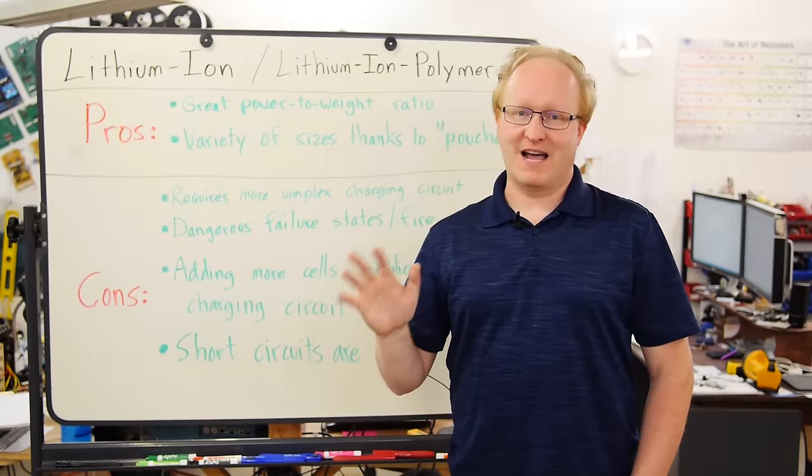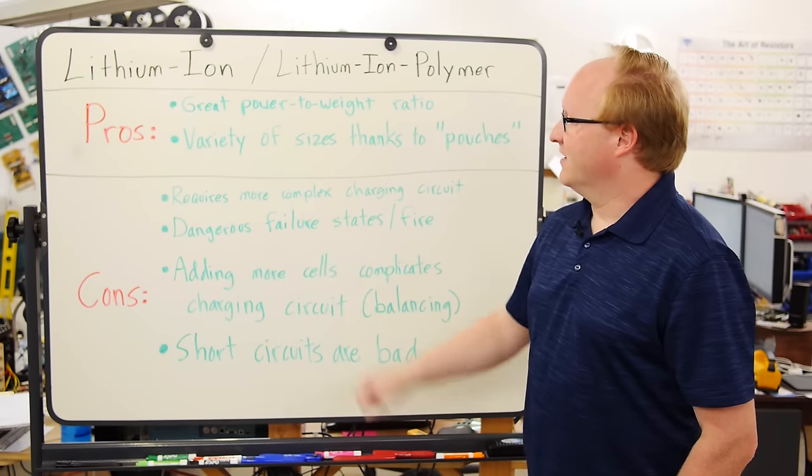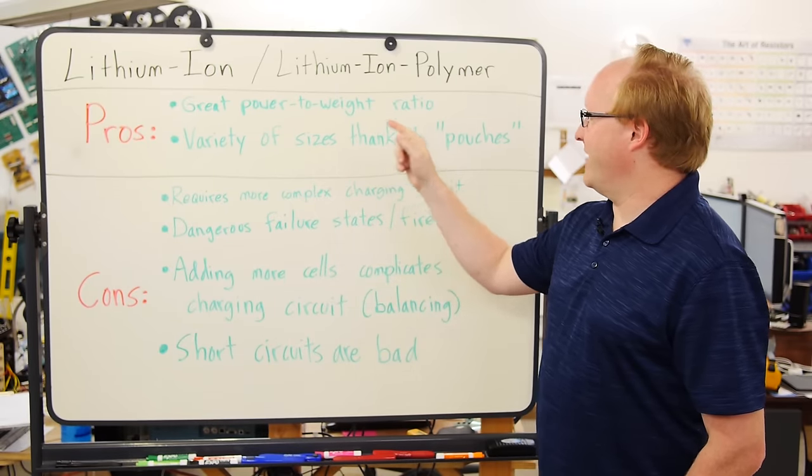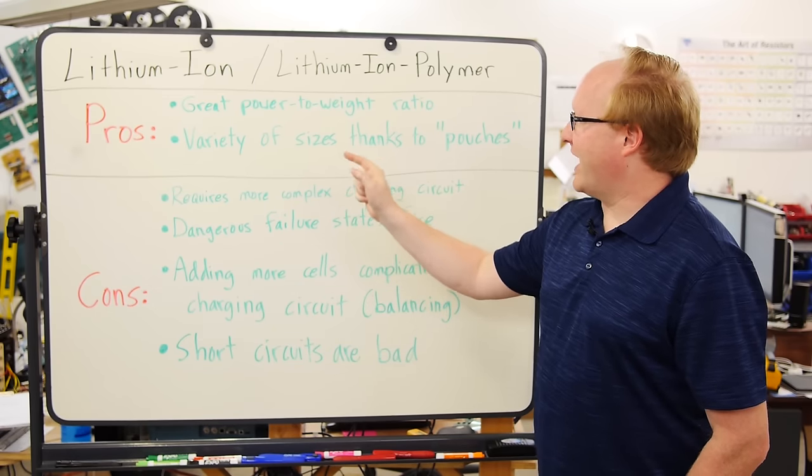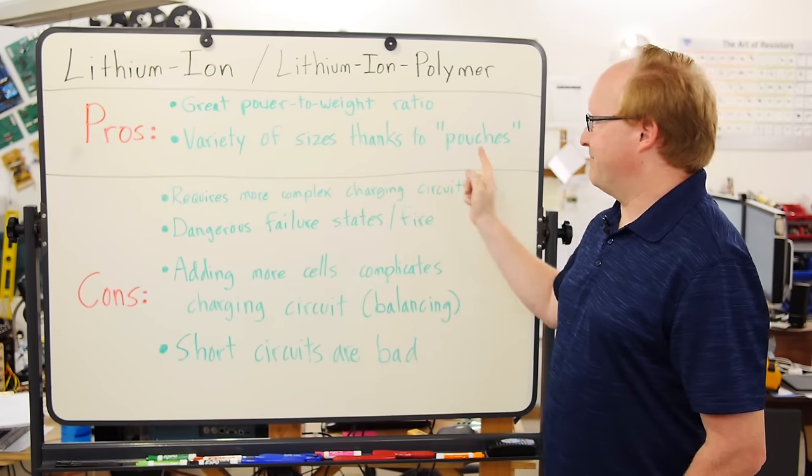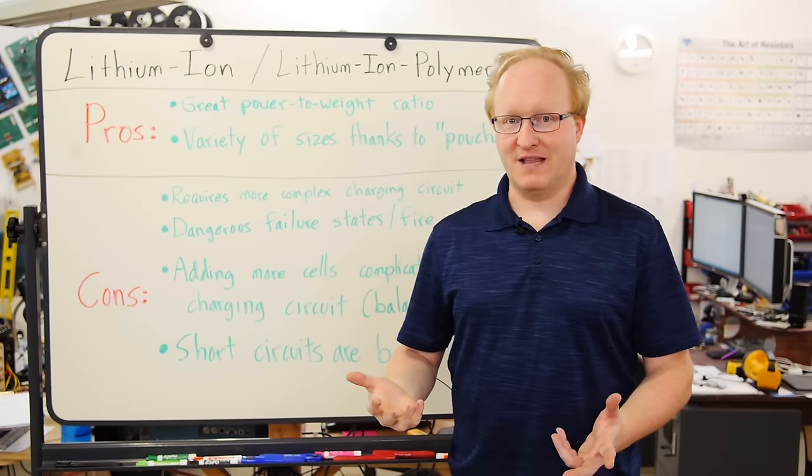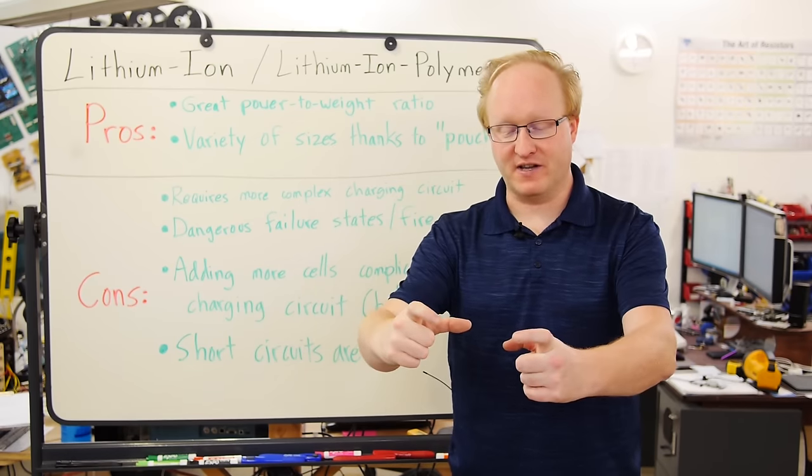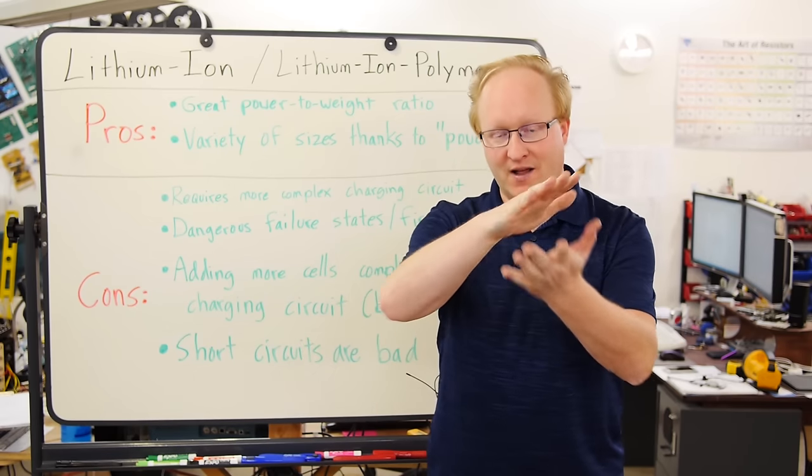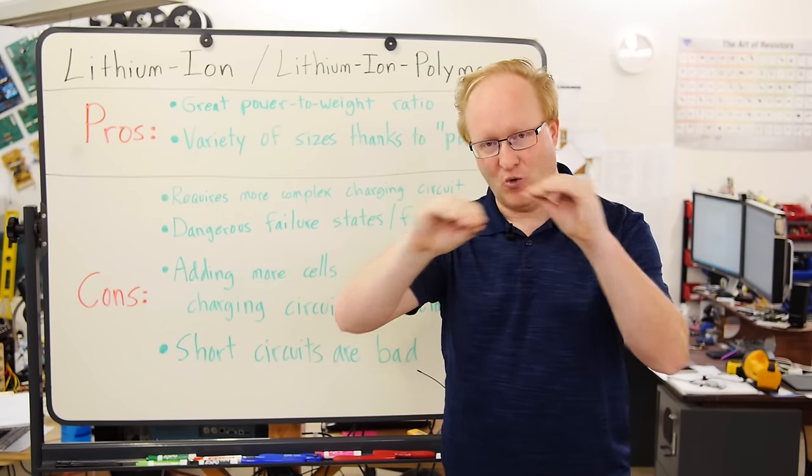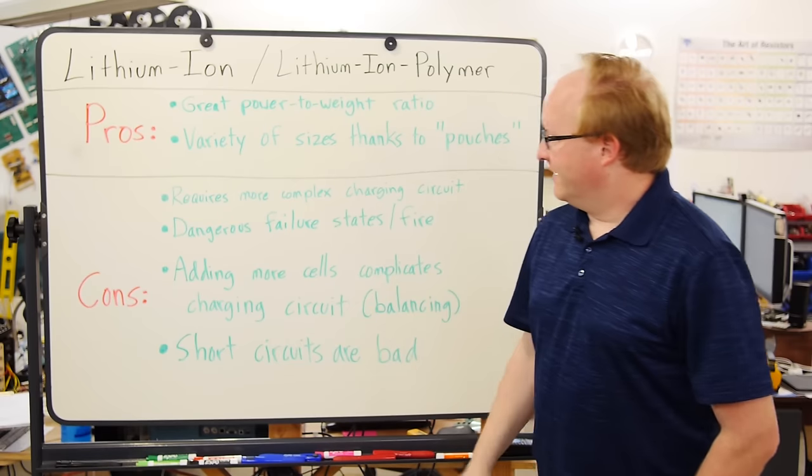Lithium ion and lithium ion polymer pros and cons. Pros, there's a great power to weight ratio. Get a lot of oomph out of those batteries. And there's a variety of sizes you could make thanks to pouches. So in a slim laptop, for instance, you could have a thicker battery here and then have thinner batteries along the side to form one multi-sized sloping battery unit.